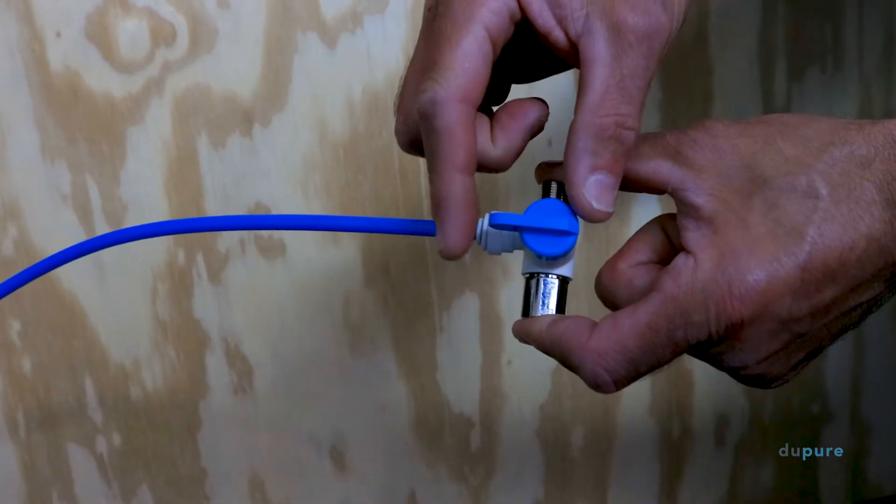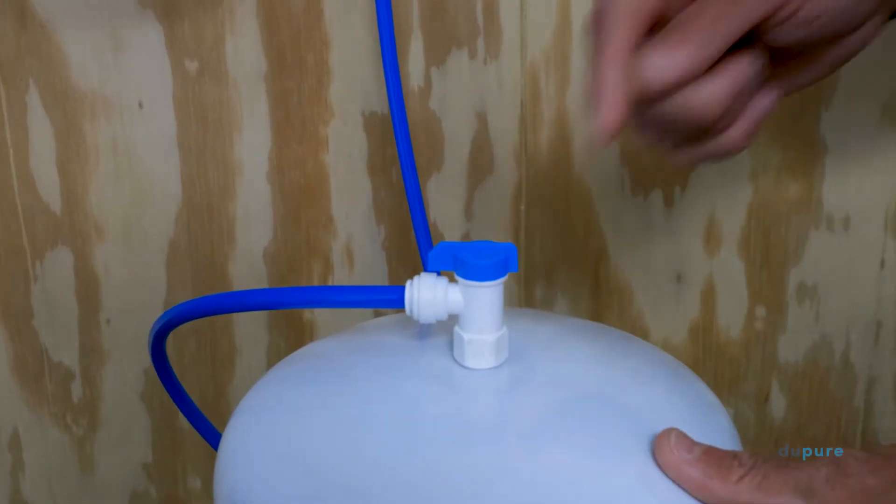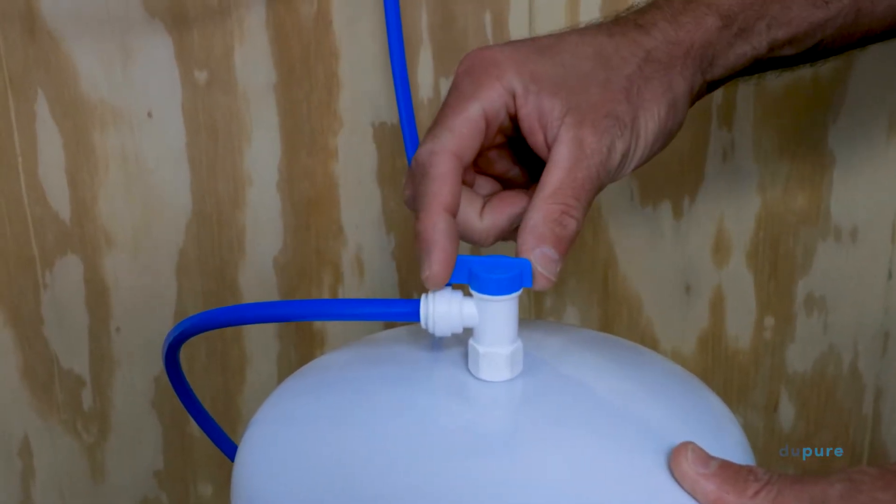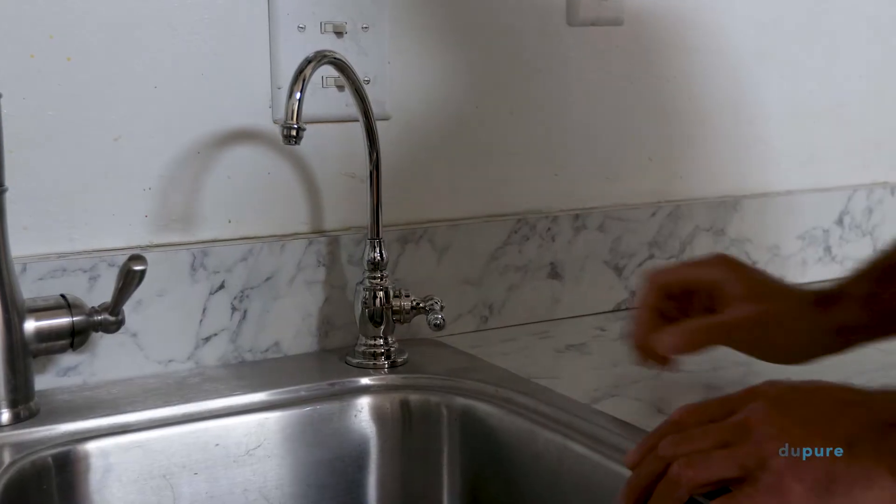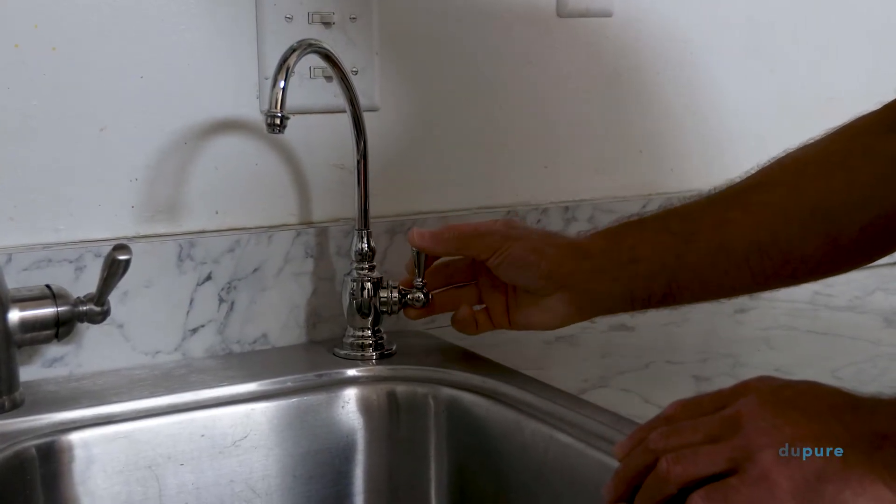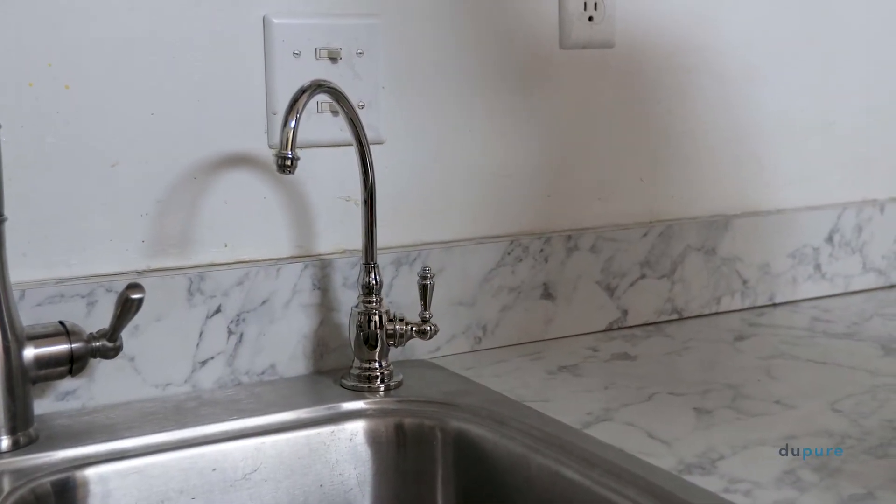The first step is to shut off the water supply to your system. Locate the shutoff valve for your feed and tank and turn both valves off. Next, release the pressure in the system by opening the spigot and letting it drip. Once the dripping has stopped, close the spigot.